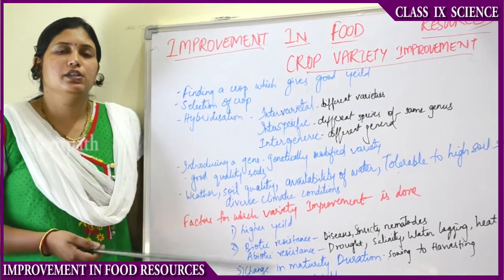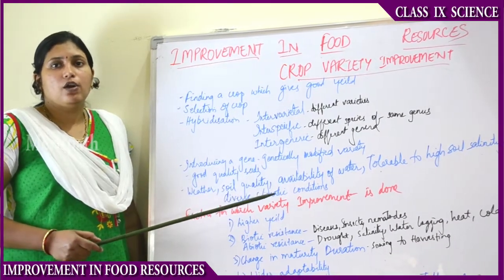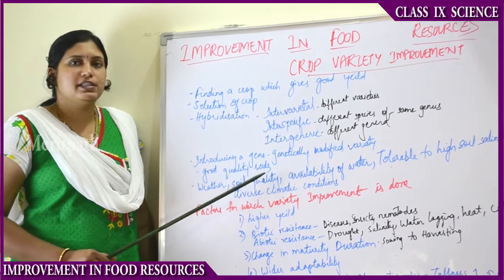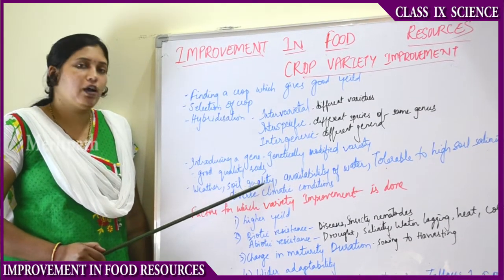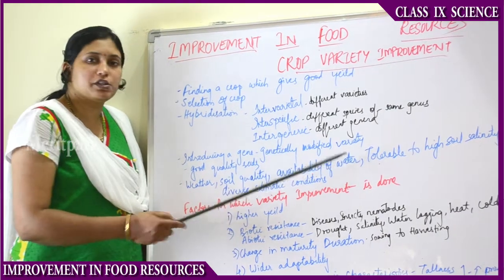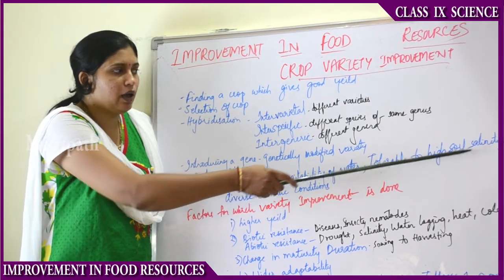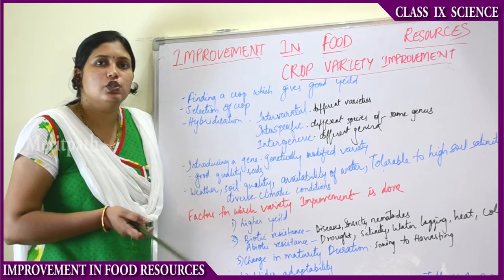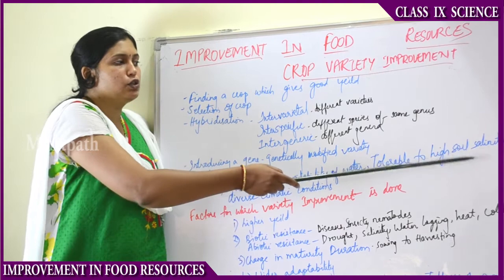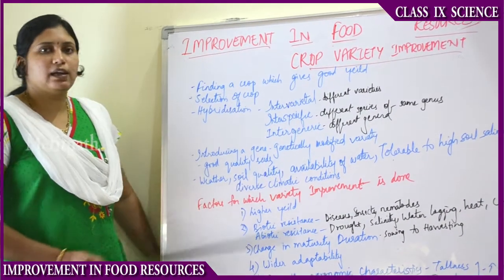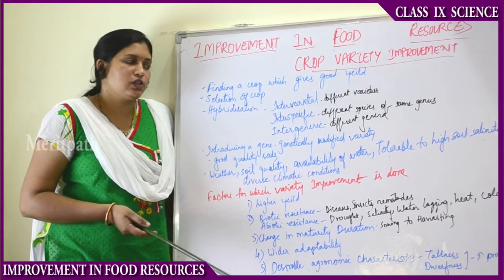We can also introduce a gene to get a genetically modified plant with desirable characteristics. Good quality seeds that germinate properly must be used. Soil quality also needs to be good - the soil should have good water holding capacity, as water availability is very important. Crops should be tolerant to high soil salinity where soil has more salt and less nutrients. Diverse climatic conditions like extreme heat, extreme cold, or frost are also important factors.